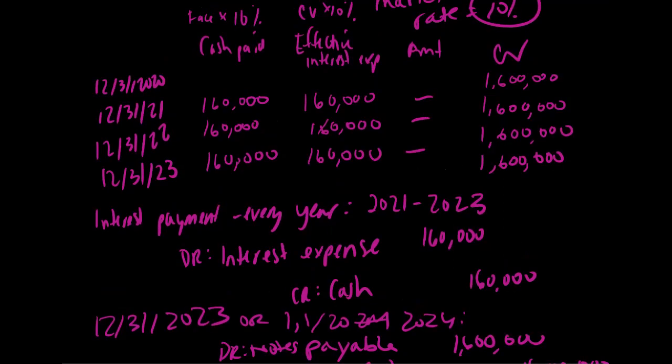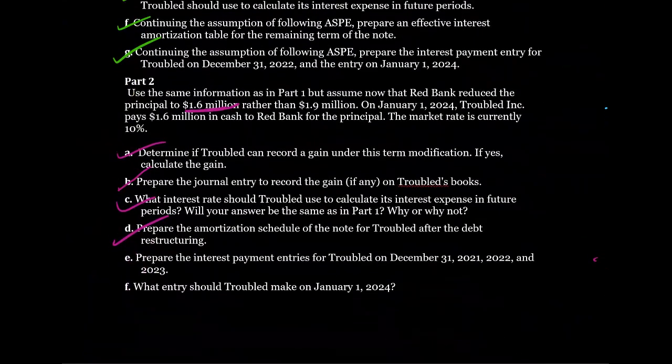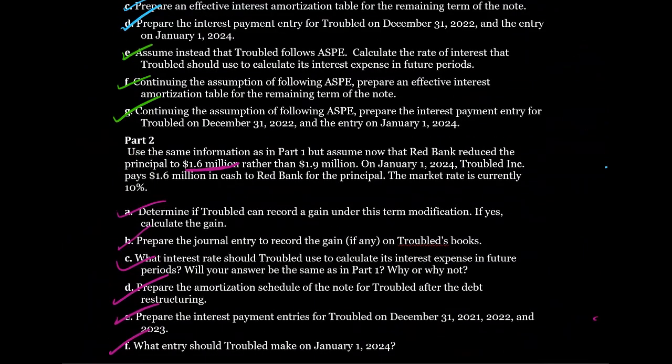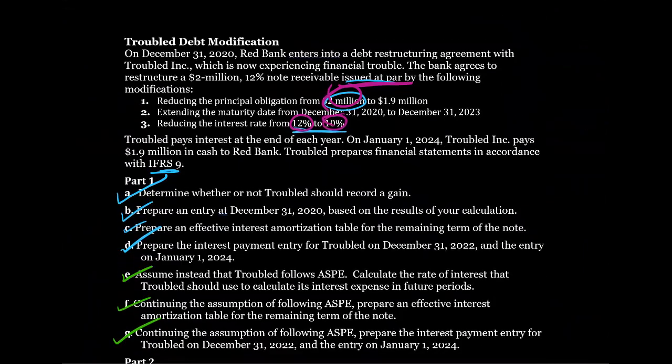That takes us through part two. This was a very long and in-depth question related to debt restructuring. We looked at an example where there was simply a modification of the existing debt where the cash flows did not differ by more than 10% between the old and new debt. In part two, the cash flows did differ by more than 10%, which meant we had a substantial modification - we took the debt off our statement of financial position and put the new debt back on. If you can get through and understand these questions related to debt modification, you should be in excellent shape for any exam question that comes up.